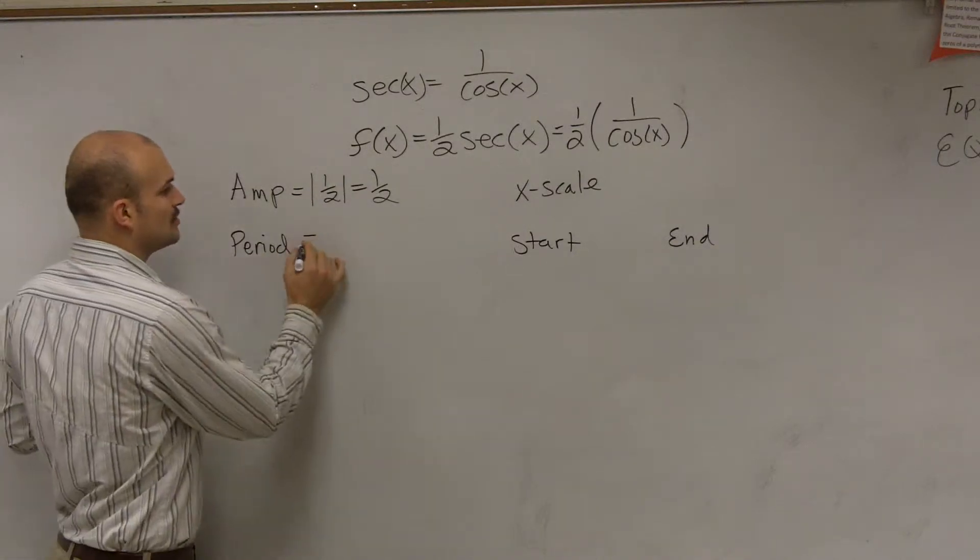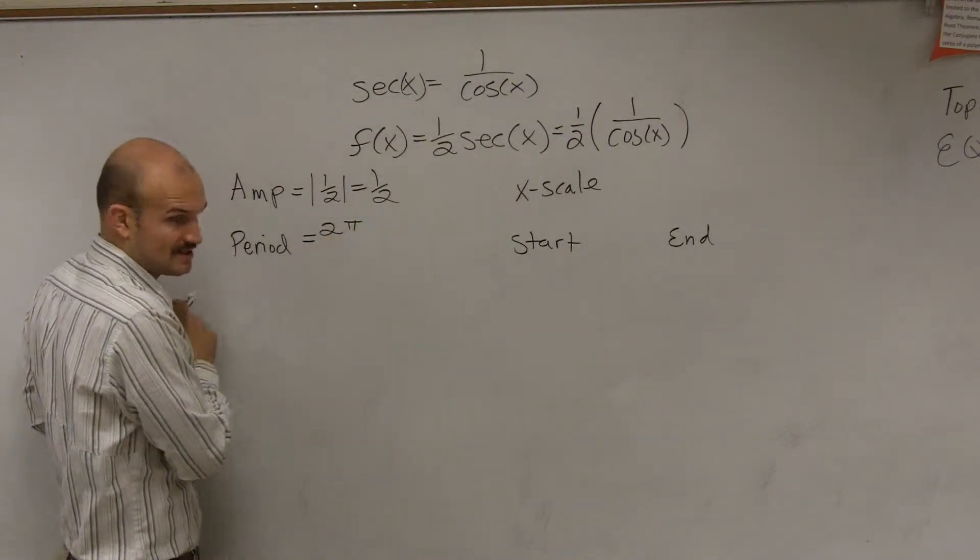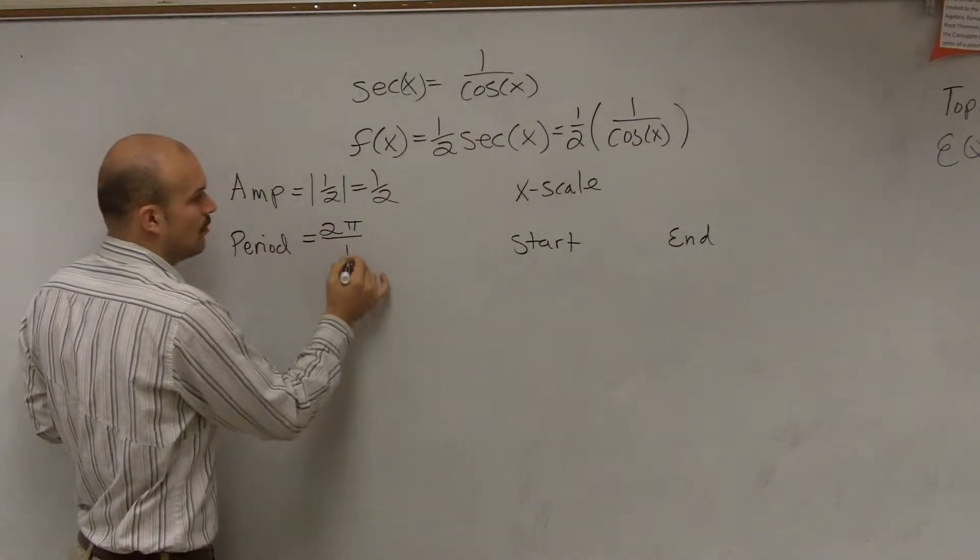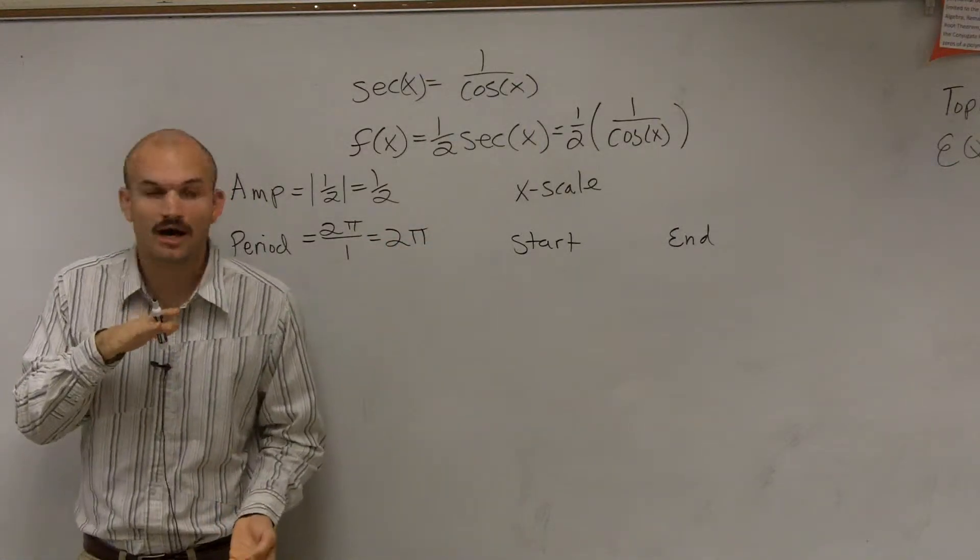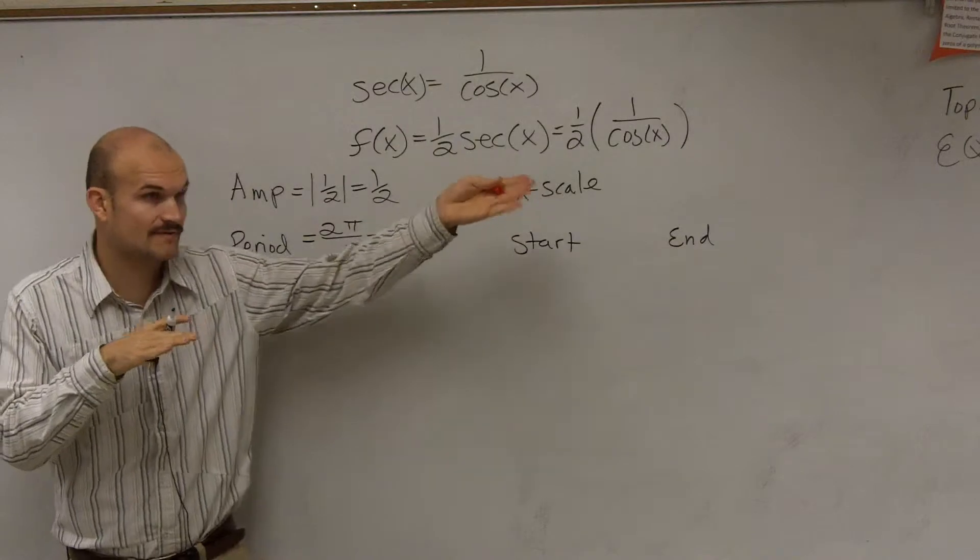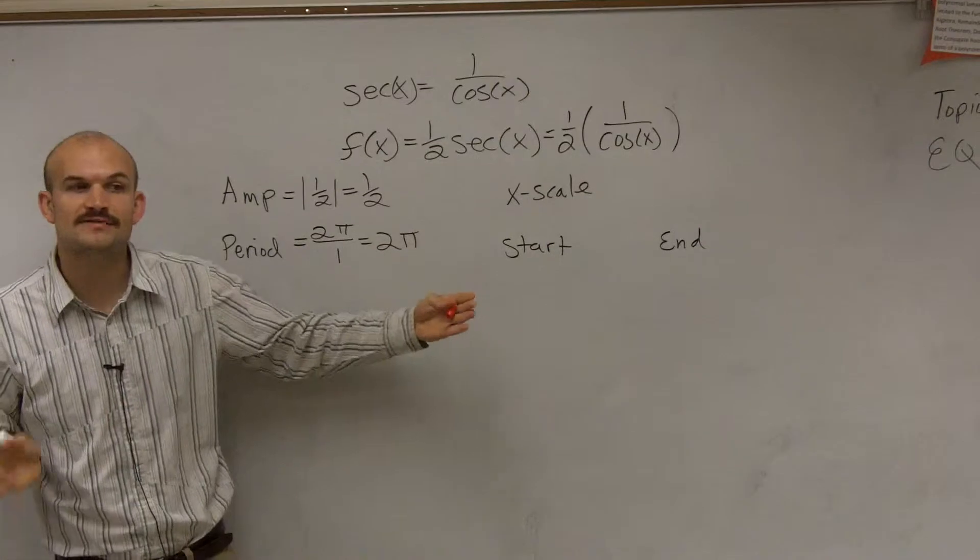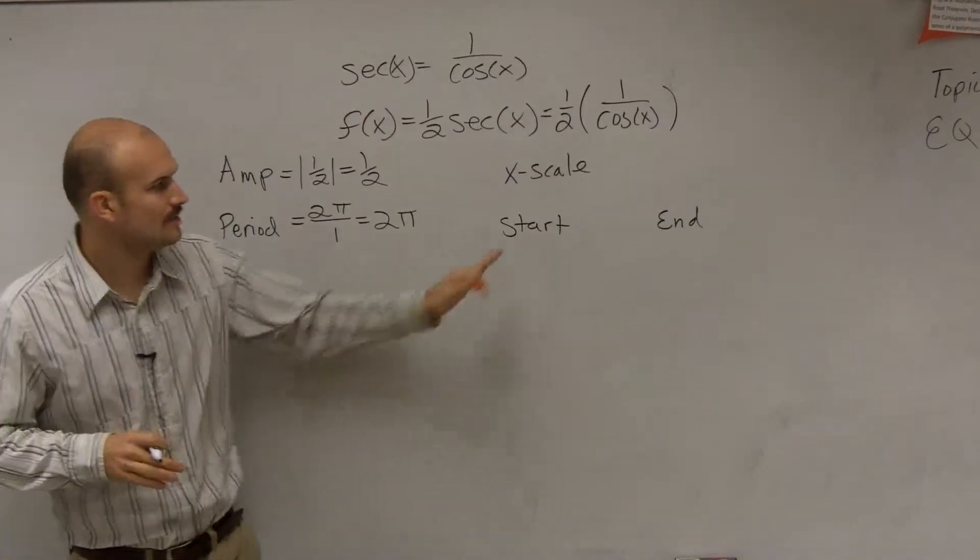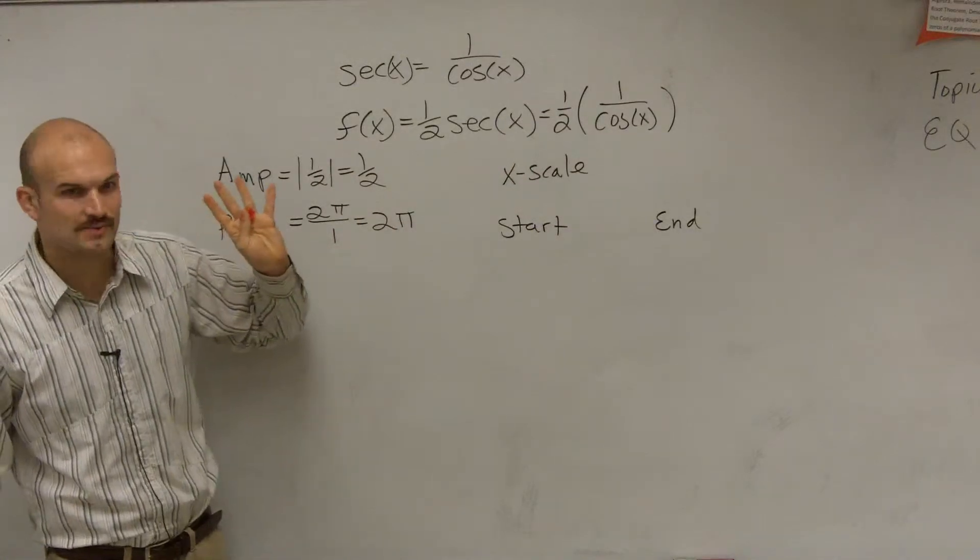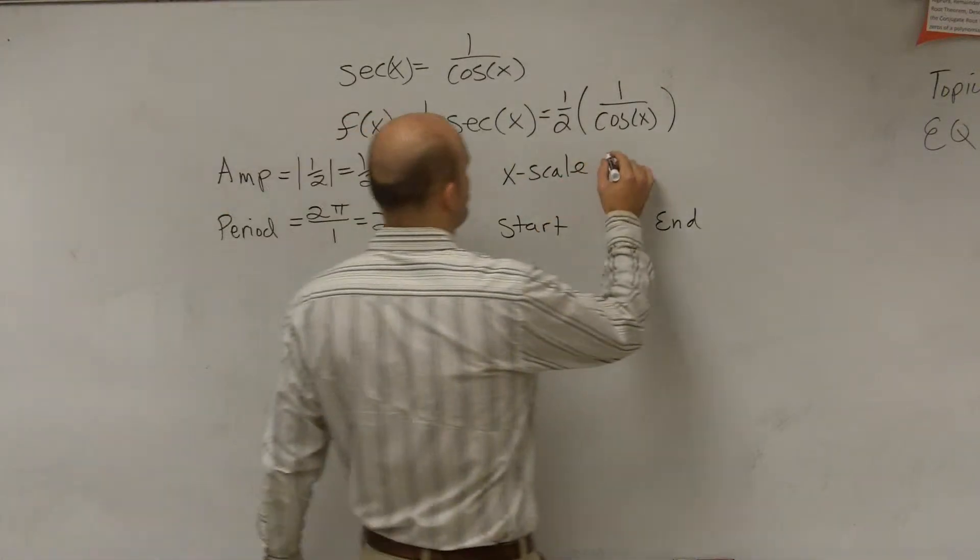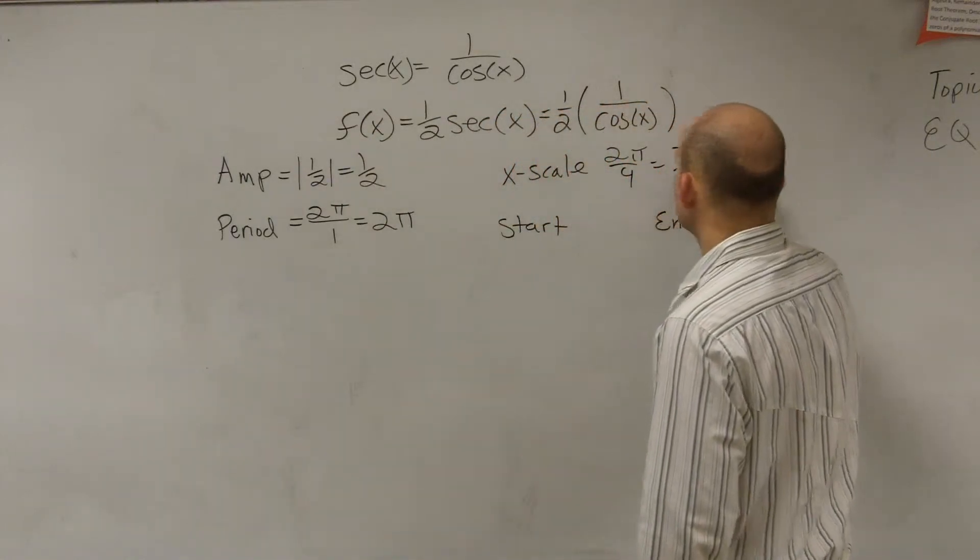The period is going to be 2 pi divided by b, where b is our coefficient of x. So it's just going to be 1. So our period is just going to be 2 pi. The amplitude is going to be the height of our cosine graph between the maximum and the minimum. The period is going to be the distance that it takes for our graph to complete one cycle. The x scale, which was on your quiz, remember, all you got to do, there's four critical points we worked about, so just take your period and divide it by 4.